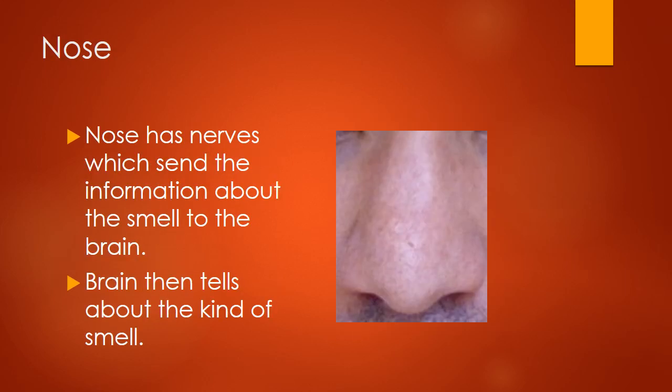The nose has nerves which are part of the brain and send information about smell to the brain. When there is a smell in the air — whether it is an unpleasant bad smell or a pleasant scented smell — the air that comes into the nose is detected by these nerves. The information is then sent to the brain, and the brain tells us what we have smelled, whether it is a pleasant smell or a bad smell.